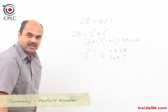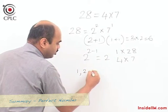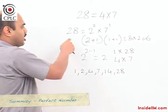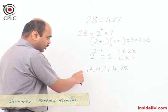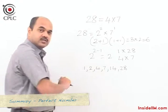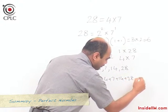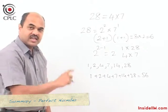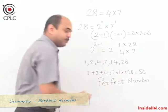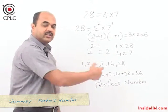The 6 factors of 28 are: 1, 2, 4, 7, 14, and 28 itself. When counting factors, we include both 1 and the number itself. The sum of all these factors is 1+2+4+7+14+28 = 56, which is double the number 28. This occurs because 28 is a perfect number — a perfect number is one where the sum of all its factors equals twice the number.